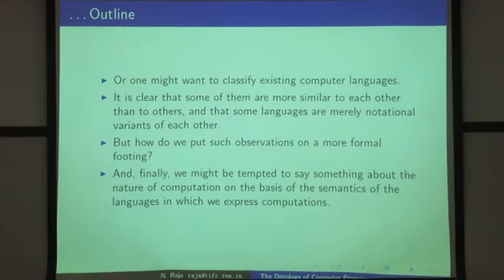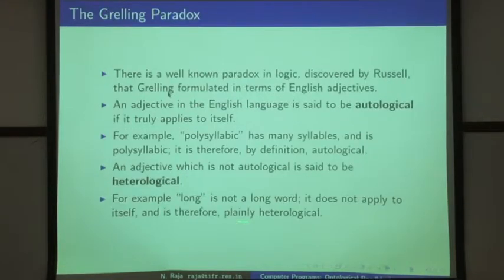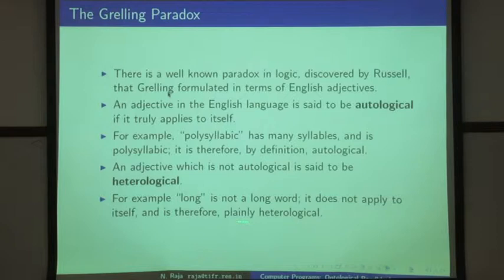So let me show you some basic essential differences in computer languages which cause problems in coming up with an ontology for them. I met some people yesterday during the museum tour who are studying English literature, so I thought it may be better to start with something from English literature. Here is something called the Grelling paradox — this is a logical paradox discovered by Russell; Bertrand Russell — and Grelling formulated it in terms of English adjectives.